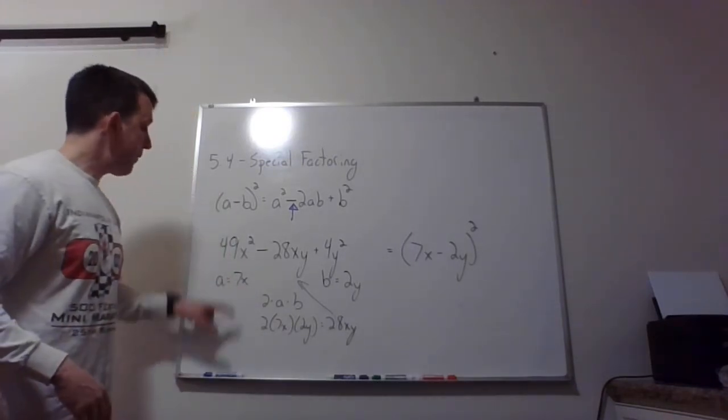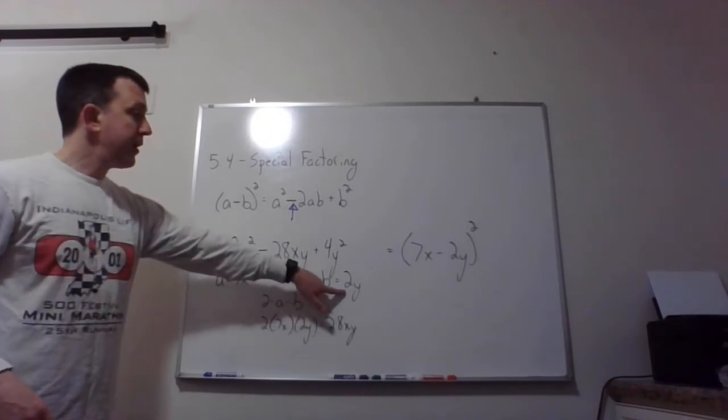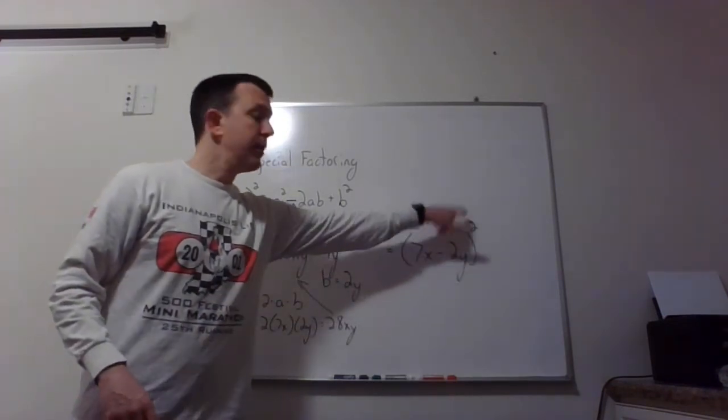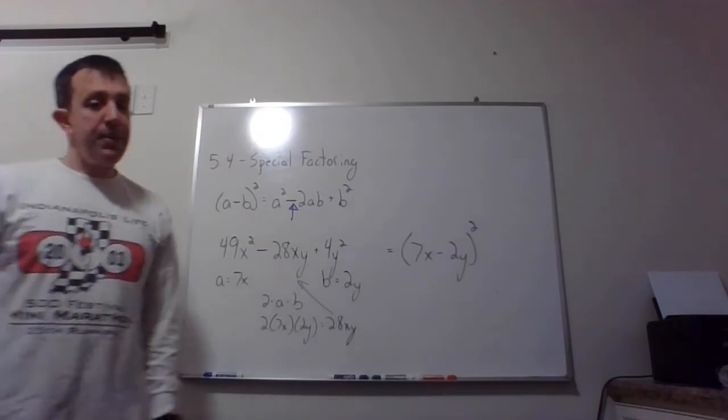Again we're looking for those squares at either end. If we have that, it's worth checking because then it's super easy, because now since I know what a is and I know what b is, it's just a minus b squared, and that's the second pattern.